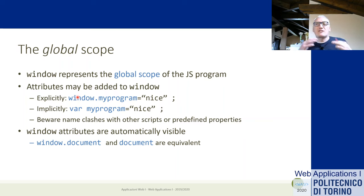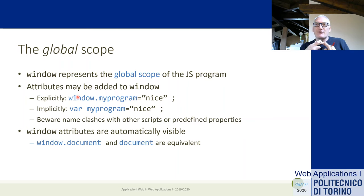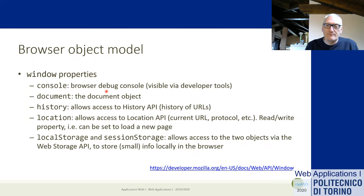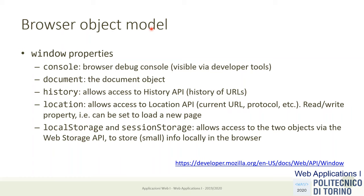This also means every time we create a global name it gets pushed to the window object, and every other script in the page will see that variable. We should hope strongly that every script uses different variable names, otherwise we're creating chaos in our program.